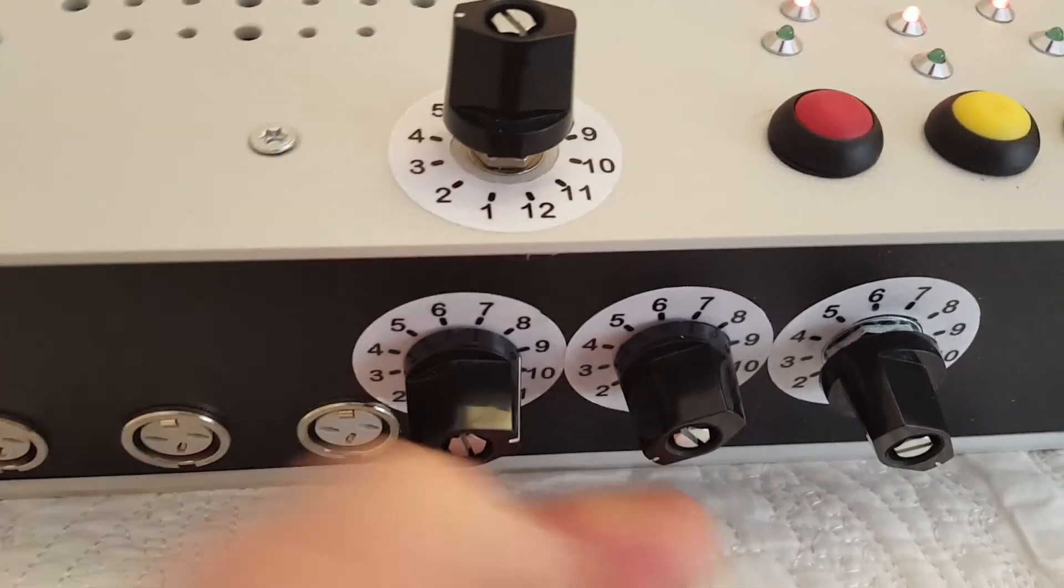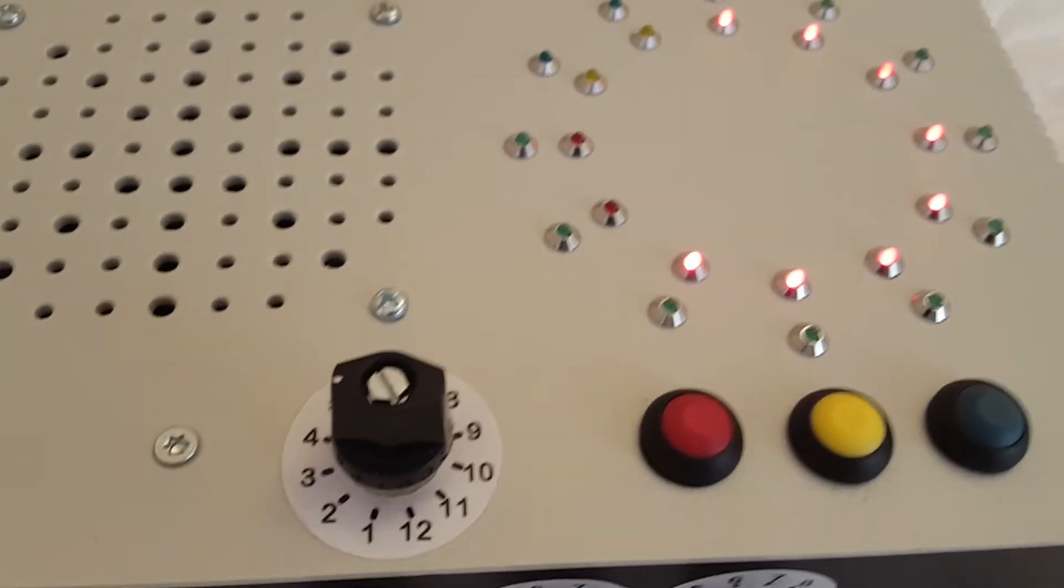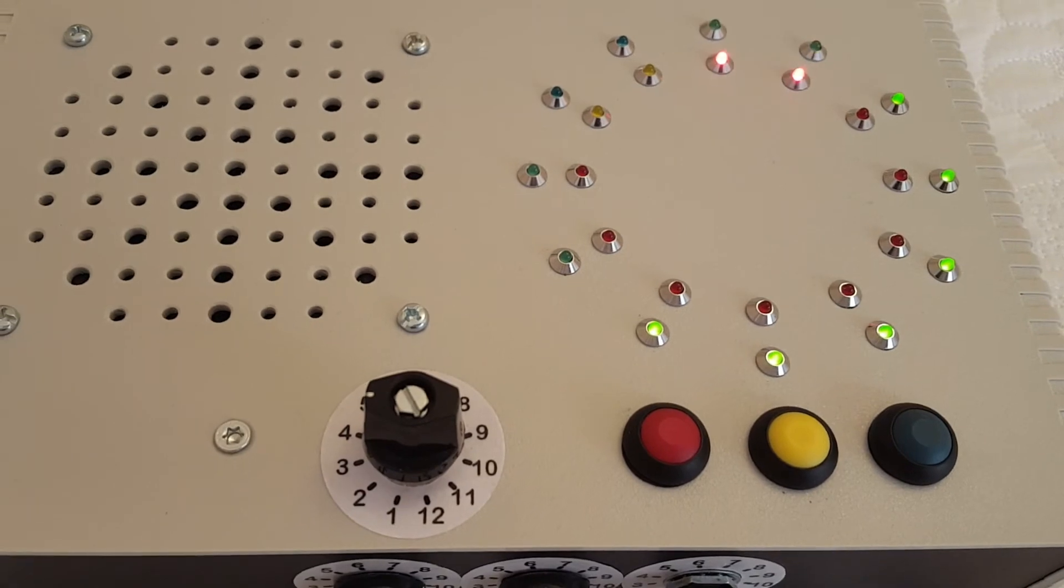Now let's ring the same method, plain bob, but this time with nine changing bells and a tenor covering. So that's called caters.